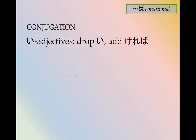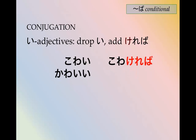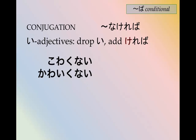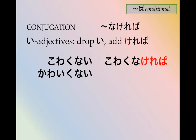Adjectives can also be formed with ば: drop the い and add ければ. So かわいい becomes かわいければ. The negative is the same pattern, changing nai to nakereba: かわくなければ, かわいくなければ.